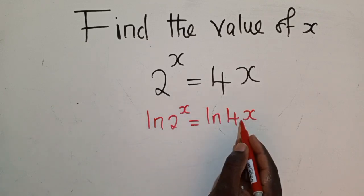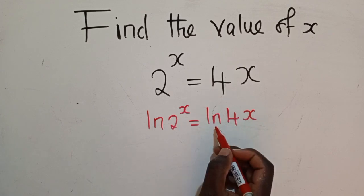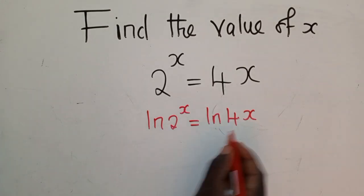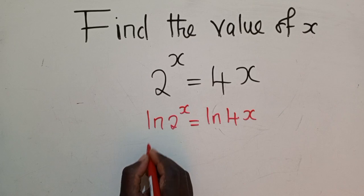But this side, where there is multiplication 4 by x, I will apply the natural log property of natural log. So here, like I said, we maintain the way it looks.